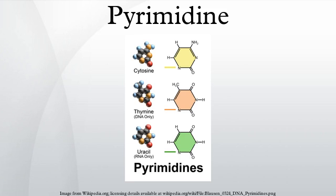In nucleic acids, three types of nucleobases are pyrimidine derivatives: cytosine, thymine, and uracil.